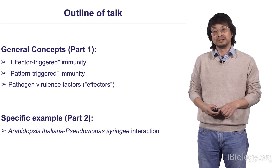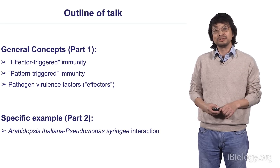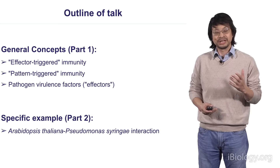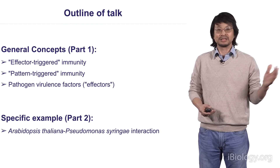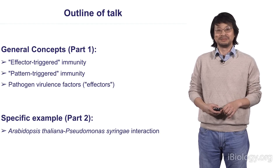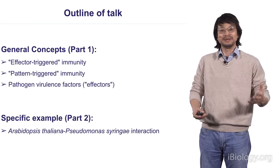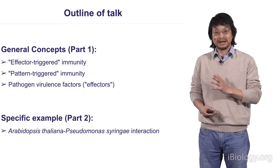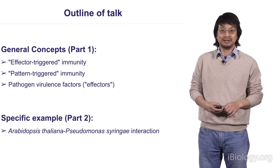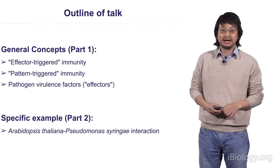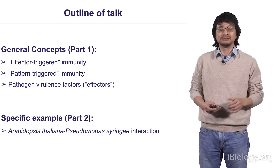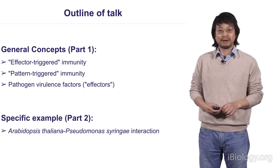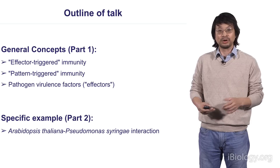In this part of my talk, I'm going to introduce some of the very general concepts dealing with host-pathogen interactions. On one side, I'm going to talk about plant immunity - yes, plants do have an immune response, like humans - but I also want to talk about pathogen virulence factors and what we call effectors. That's part one. In part two, I'm going to illustrate this concept using the model Arabidopsis-Pseudomonas syringae system that we and many others are working on.